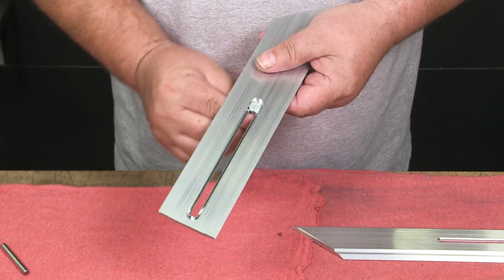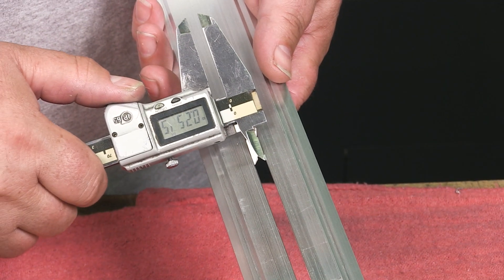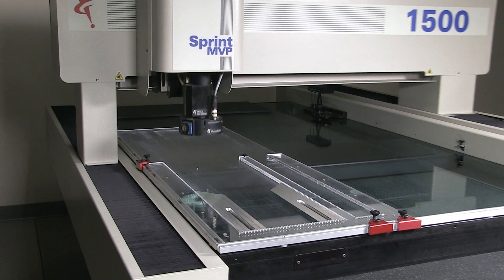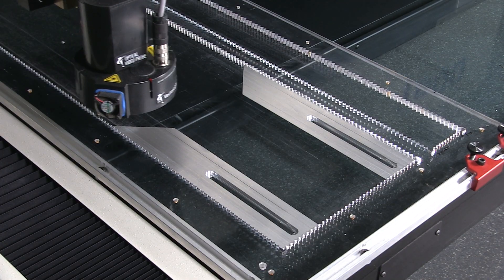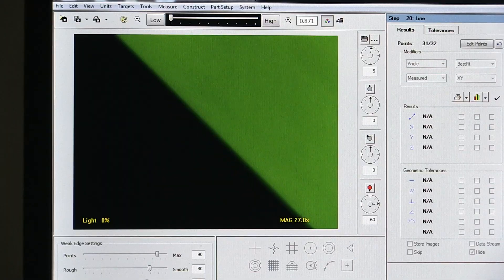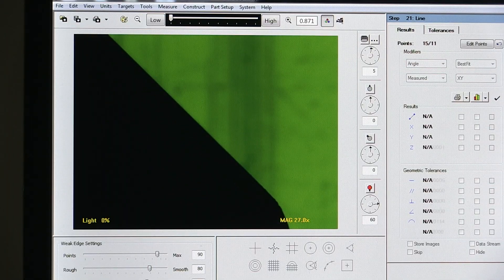After the milling cycle is complete, the parts are hand inspected by the machinist. Then, to ensure accuracy of the bevel, we check the parts on our state-of-the-art video optics system.